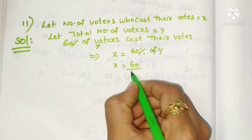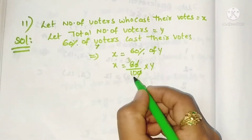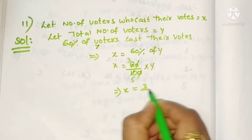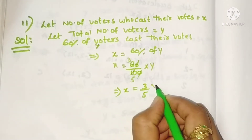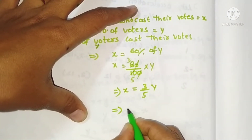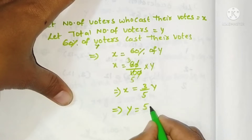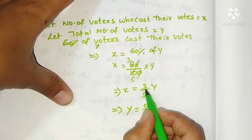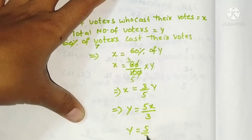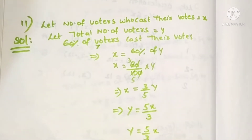Percent means divided by 100, and 'of' means multiply. The zeros cancel, giving us threes and fives, so x equals 3/5 of y. We want to find y, so transposing: y equals 5x/3.